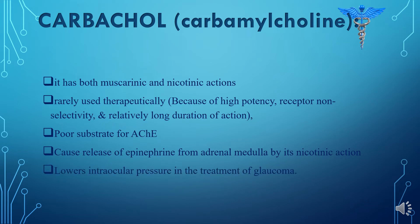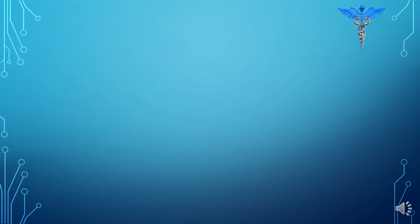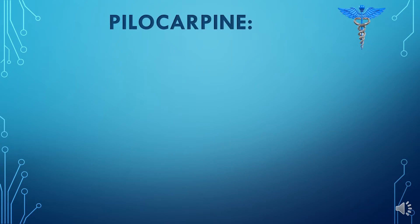Carbachol is used in the treatment of glaucoma, in which there is increased intraocular pressure. It basically decreases or lowers the intraocular pressure and thus is useful in the treatment of glaucoma. Next, we have pilocarpine, which is also a direct-acting cholinergic agonist that binds directly to the cholinergic receptors.